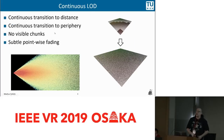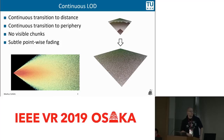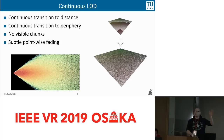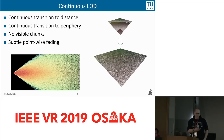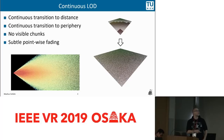What we want to have is a continuous transition, so we don't have level of detail 0, 1, 2, 3 — we also have anything in between. We end up with some kind of uniform distribution of points in screen space.